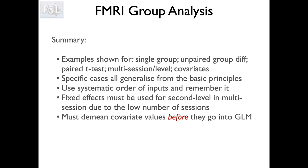When doing your group level analysis, remember that inputs must be ordered, and you are responsible for deciding that order — typically different subjects. You need a systematic ordering and must remember it, because it's crucial for how you set up your design matrix and interpret contrast results. Fixed effects is something we don't normally use, but we do use it in one specific instance: the second level when we've got multiple sessions, due to the low number of sessions per subject. We then do mixed effects at the final level, giving results that generalize to the population. Finally, if you're using covariates — whether of interest or not — you must demean the values before they go into the GLM, as that is essential for interpretable results.